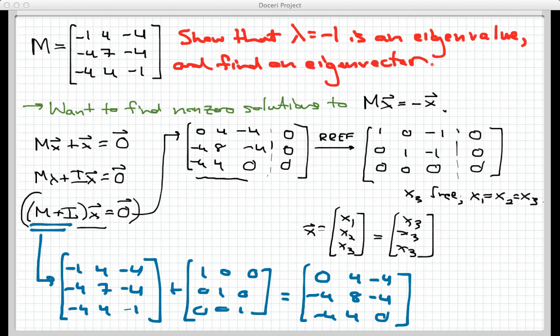I can pull out this factor of x3, and I'm left with a numerical vector 1, 1, 1. Now, let's just focus in on this solution here. I'll outline the whole thing in red, like so.